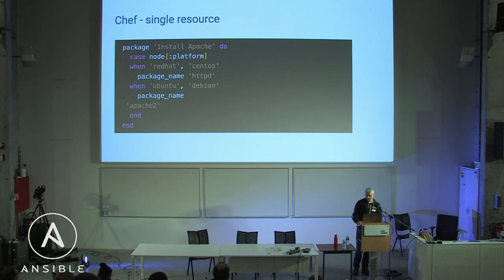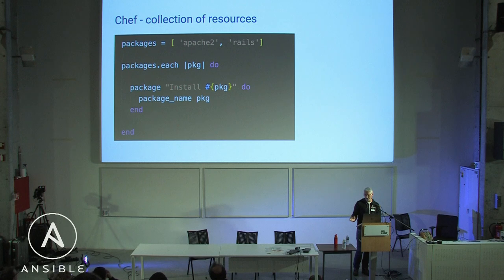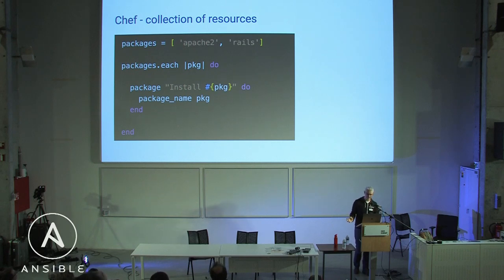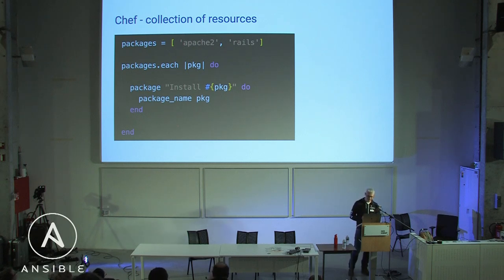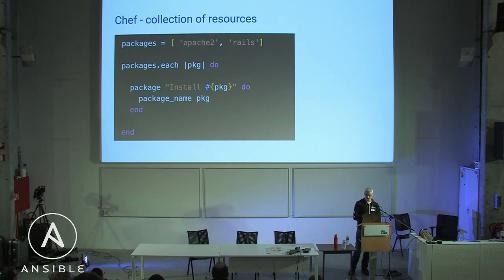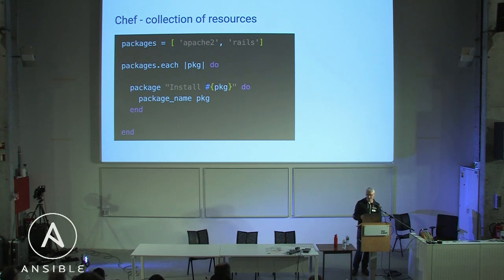The power comes when you need to install more than one package. You make a list of packages and for each package in that collection you pass it to a block with an argument — the 'pkg' variable is substituted each iteration of the loop. The first evaluation installs Apache2, the second installs Rails, and so on.